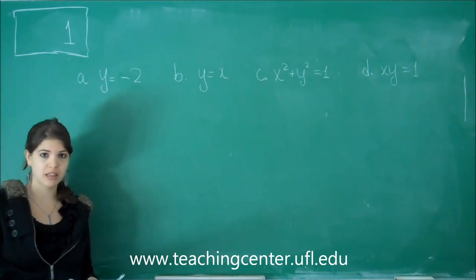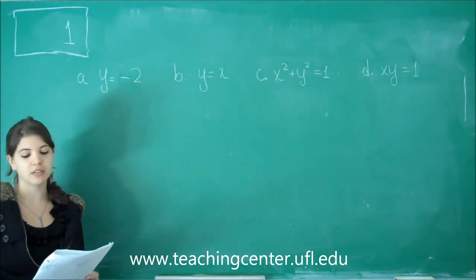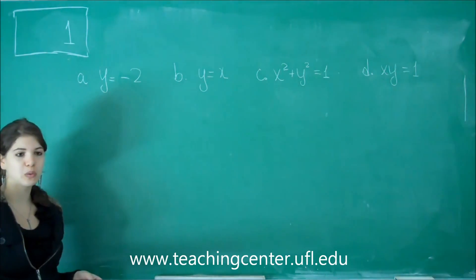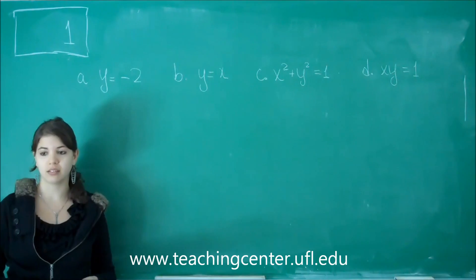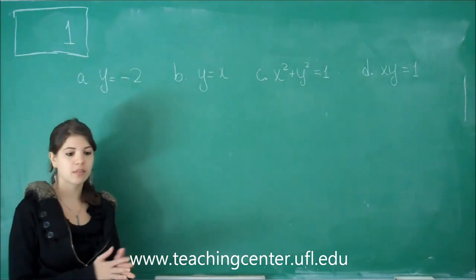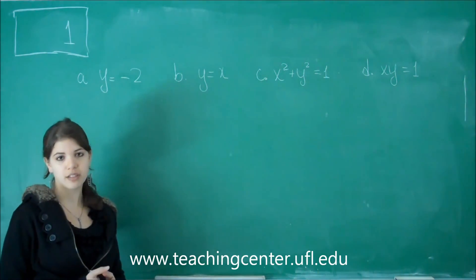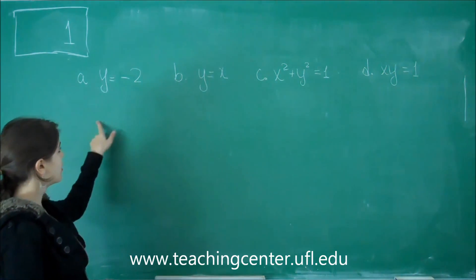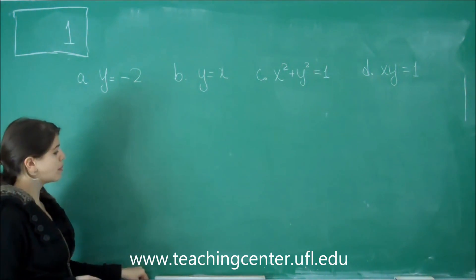This is problem number one on the multiple choice, which asks which of the following does not represent y as a function of x. This type of problem requires you to identify different types of functions and determine if they are functions or not. You need to know what the graph looks like, and you'll know it's a function if it passes the vertical line test. So these are the four options given in the multiple choice. Let's go one by one.